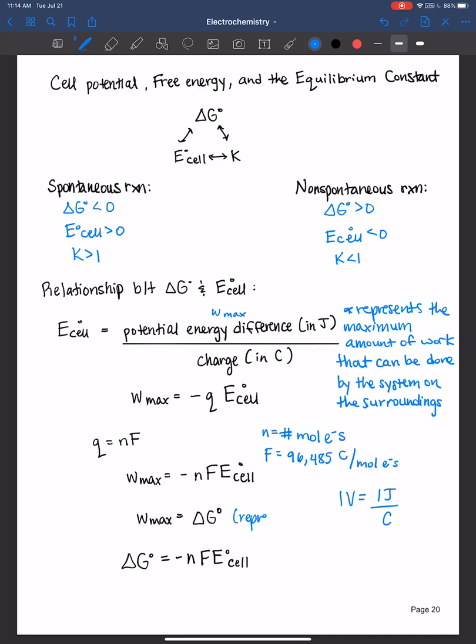So Gibbs free energy represents the maximum work that can be done by a reaction. And so therefore we can plug in delta G for work max. So delta G is equal to negative nFE. This is the equation that you will use to derive the relationship between cell potential and the Gibbs free energy of the reaction. No need to worry too much about this derivation here. I just wanted you to know where this equation came from and how these two are related with one another. But this is the equation that you will utilize.